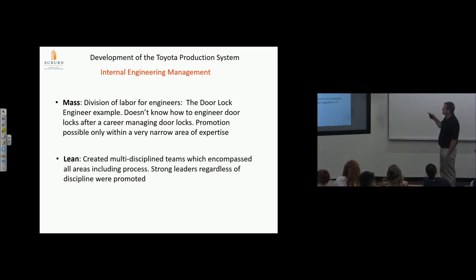Lean created multi-discipline teams which encompassed all areas including process. Strong leaders regardless of discipline were promoted. In other words, they might even let me manage an engineering team and I'm not an engineer, at Toyota. They'd say, 'Tom has the right characteristics to make sure things happen. We don't care whether he can engineer it or not—there's a lot of engineers on the team. Let's have him run that team.' They would do that. I think that's why I love them so much—they respect me. I have something to offer.